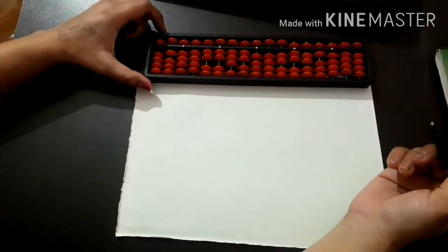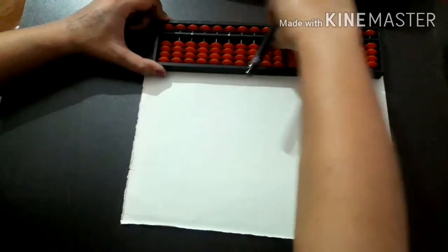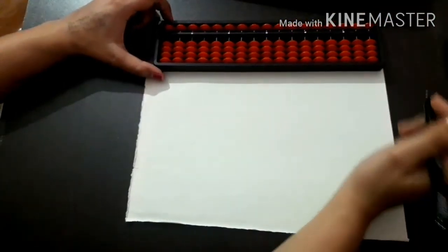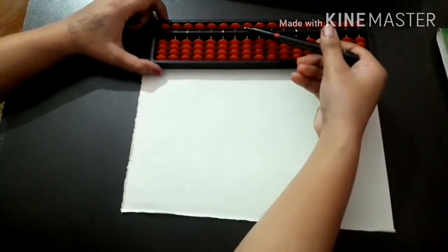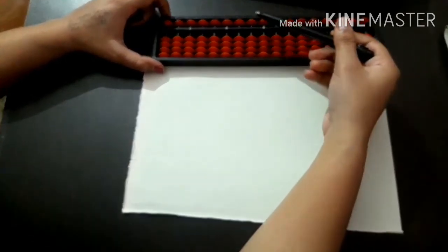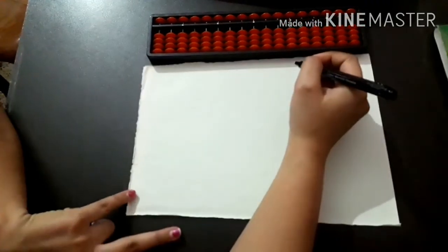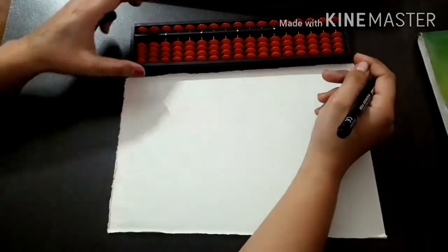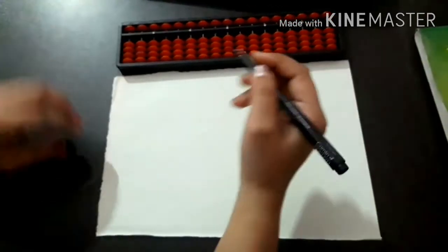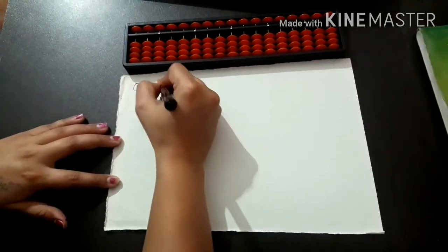Students, here in front of me one Abacus tool is there. Before starting you have to set your Abacus — put all the upper beads up and the lower beads down. This is the units rod. Besides the units rod there is the tens rod and besides the tens rod there is the hundreds rod. You have to start the calculation from the hundreds rod. Today we will take the product of 2 and 3. Our first question is 23 into 2.